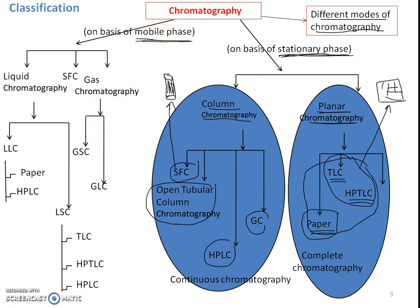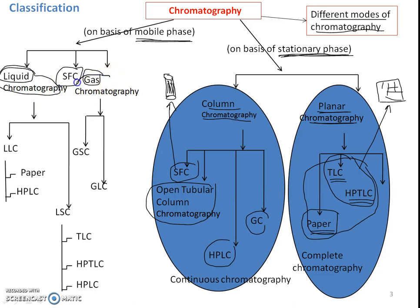Another way by which chromatographic methods are classified is on the basis of the mobile phase. The mobile phase used may be a liquid, a gas, or a supercritical fluid. On that basis, if liquid is the mobile phase, it is called liquid chromatography; if gas is the mobile phase, it is called gas chromatography.